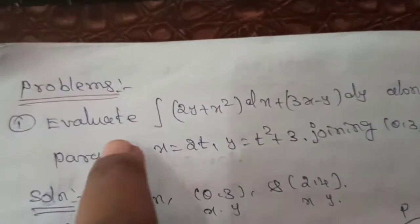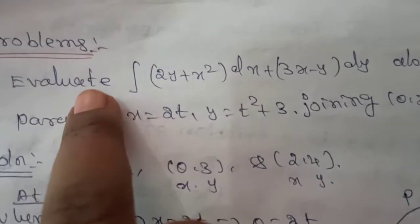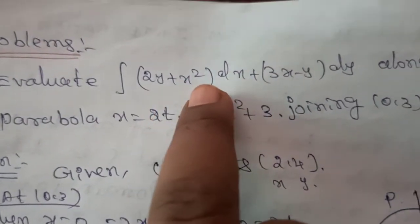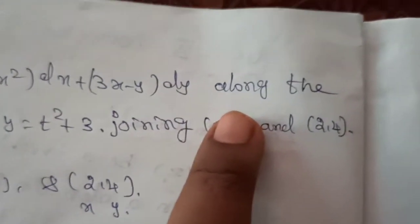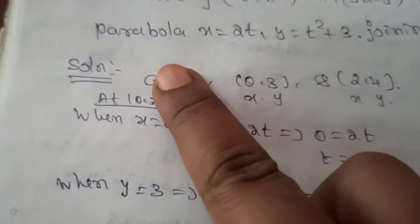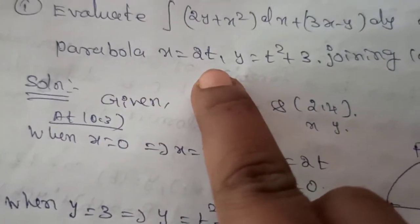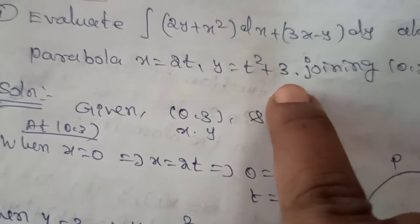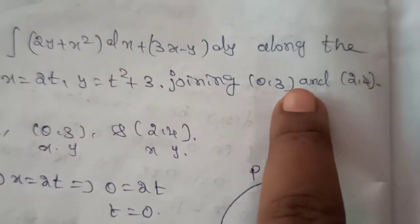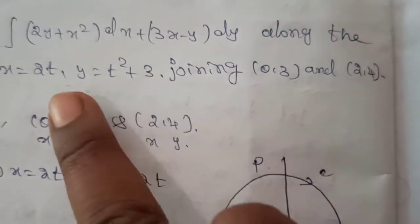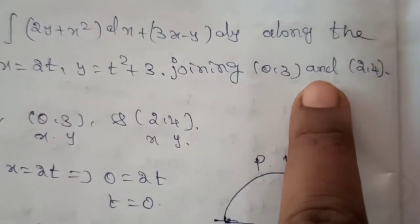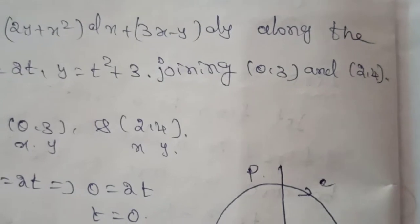Now see the problem based on the line integral. First problem: Evaluate the integration of (2y plus x squared) dx plus (3x minus y) dy along the parabola x equal to 2t, y equal to t squared plus 3, joining the two points (0, 3) and (2, 4).